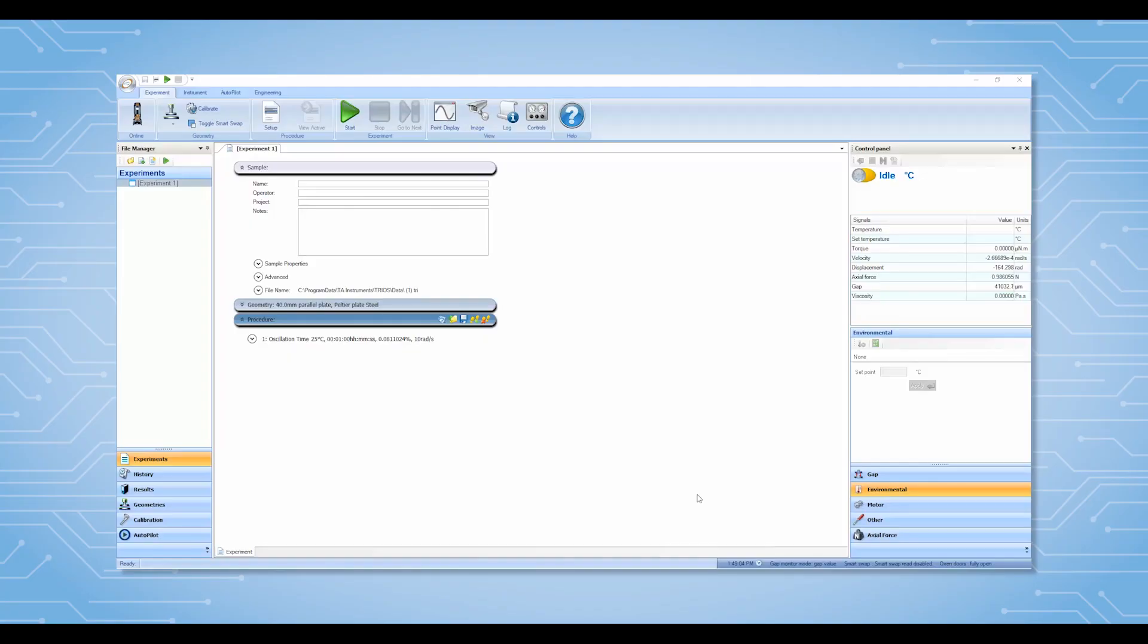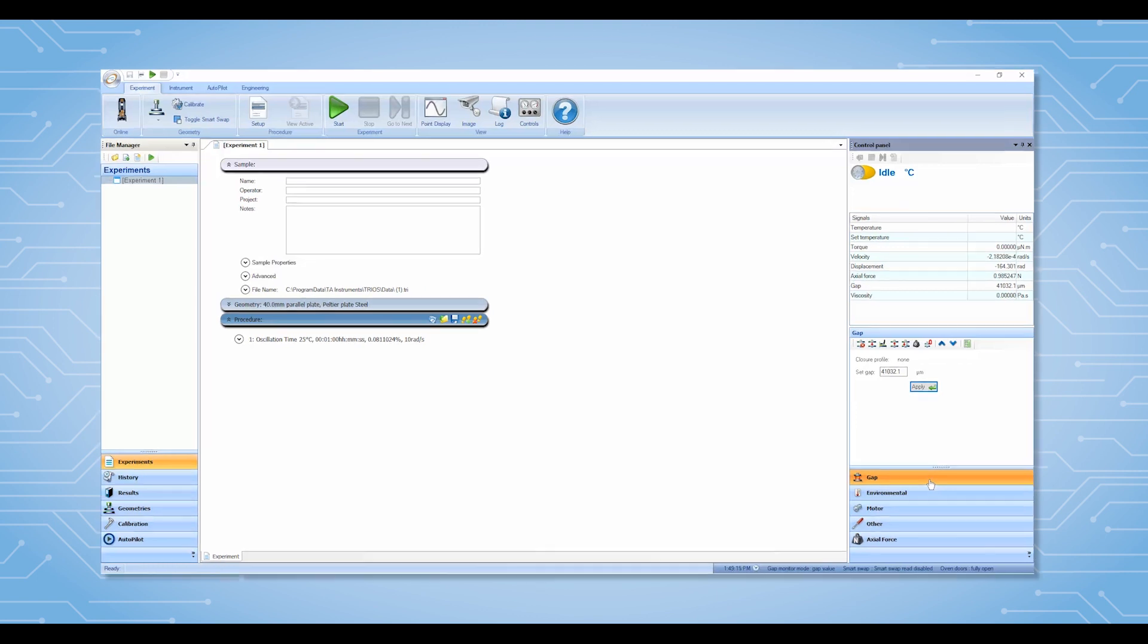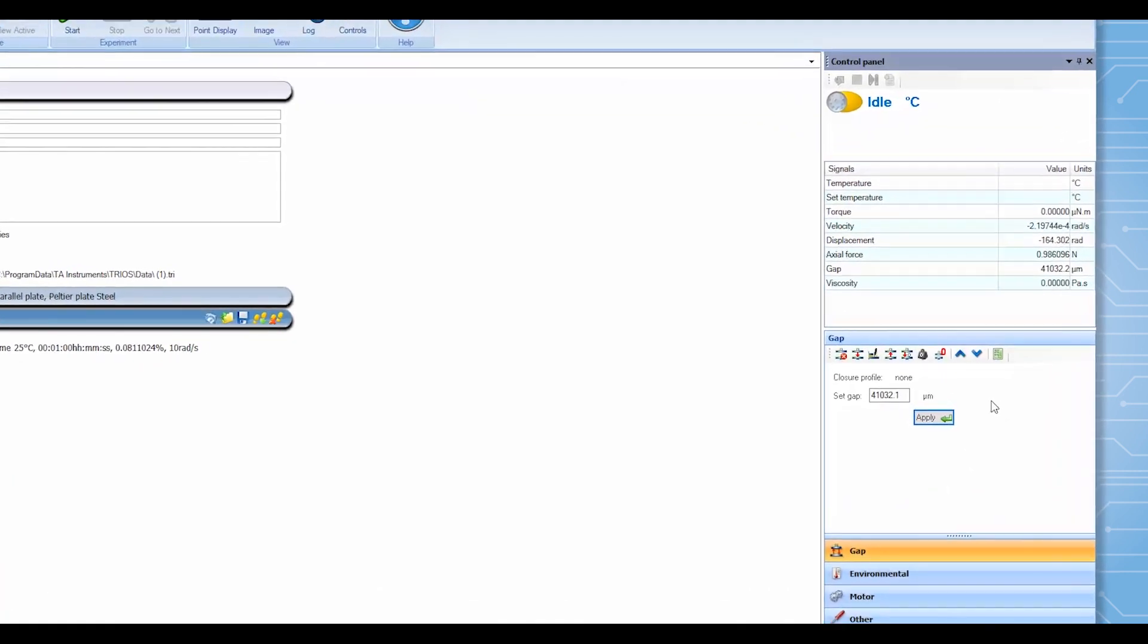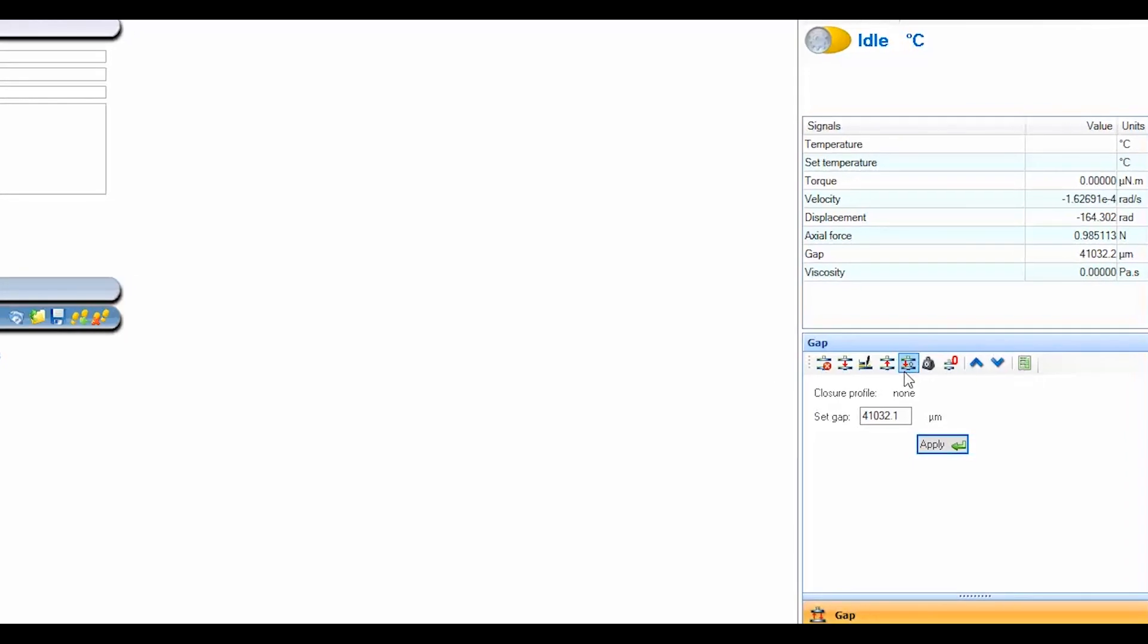Alternatively, sample loading can be performed through TRIO software control. From the bottom of the control panel, click on the gap bar to access all of the gap setting functions. When moving your mouse cursor to each icon, TRIO software will pop out a window indicating the function of this icon.